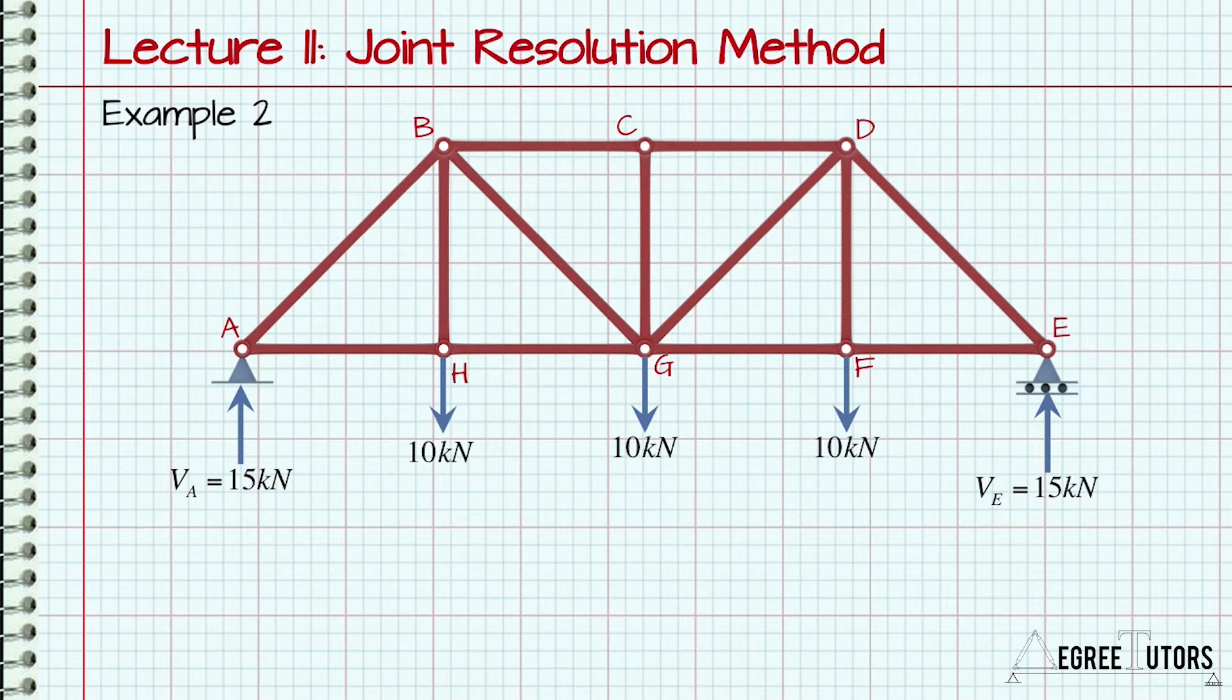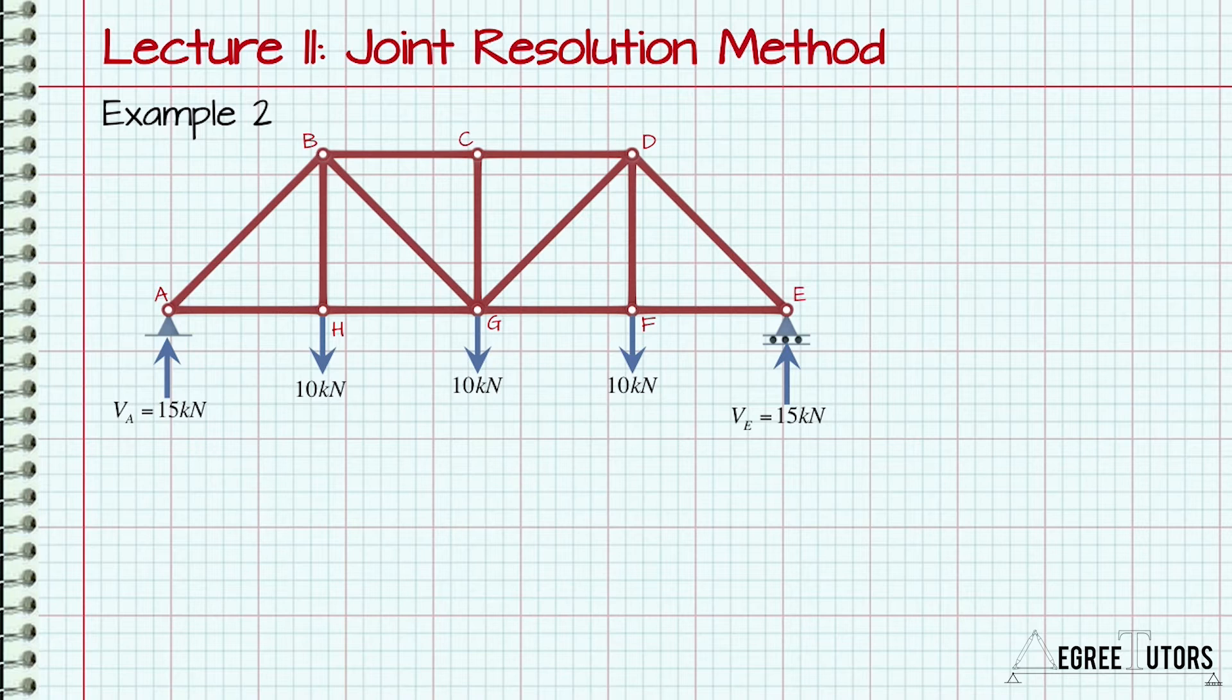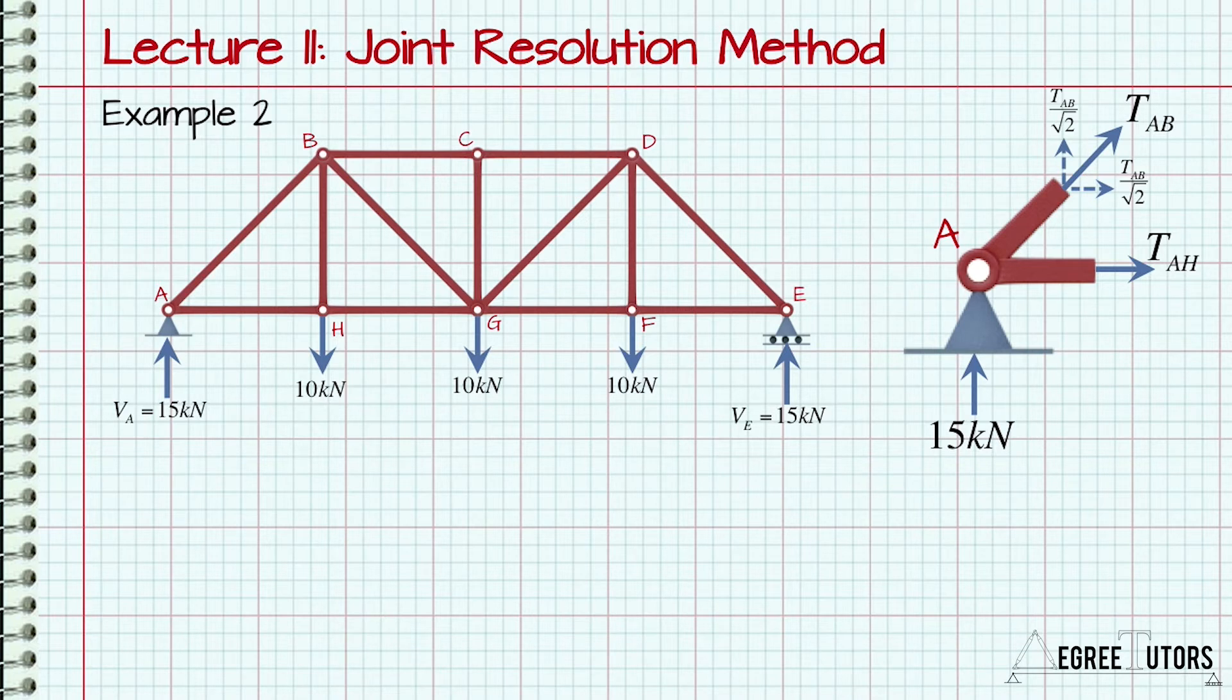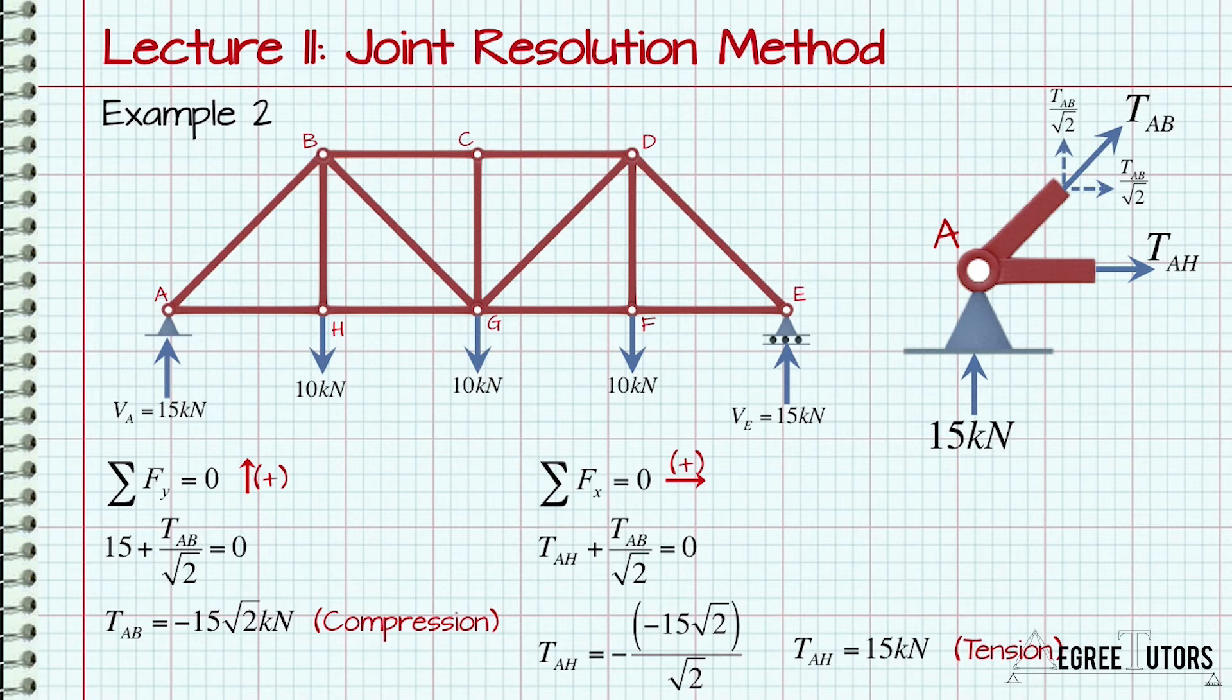Now we can identify our first joint to isolate. It turns out that the only joint we can start with is A or E, as these are the only joints with two unknowns. So isolating joint A, we cut through the incoming members and reveal the internal member forces, which we assume to be tension until proven otherwise. Applying our two force equilibrium equations yields TAB equal to 15 root 2 kN in compression and TAH equal to 15kN in tension. Again, make sure to represent this information on the structure.